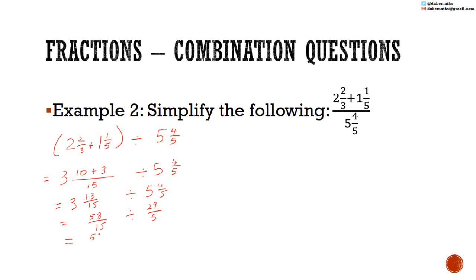That is equal to 58 over 15 multiplied by 5 over 29. Cancelling: 5 into 5 is 1, 5 into 15 is 3. 29 into 29 is 1, 29 into 58 is 2. So 2 multiplied by 1 is 2, and 3 multiplied by 1 is 3. The answer is 2 thirds.